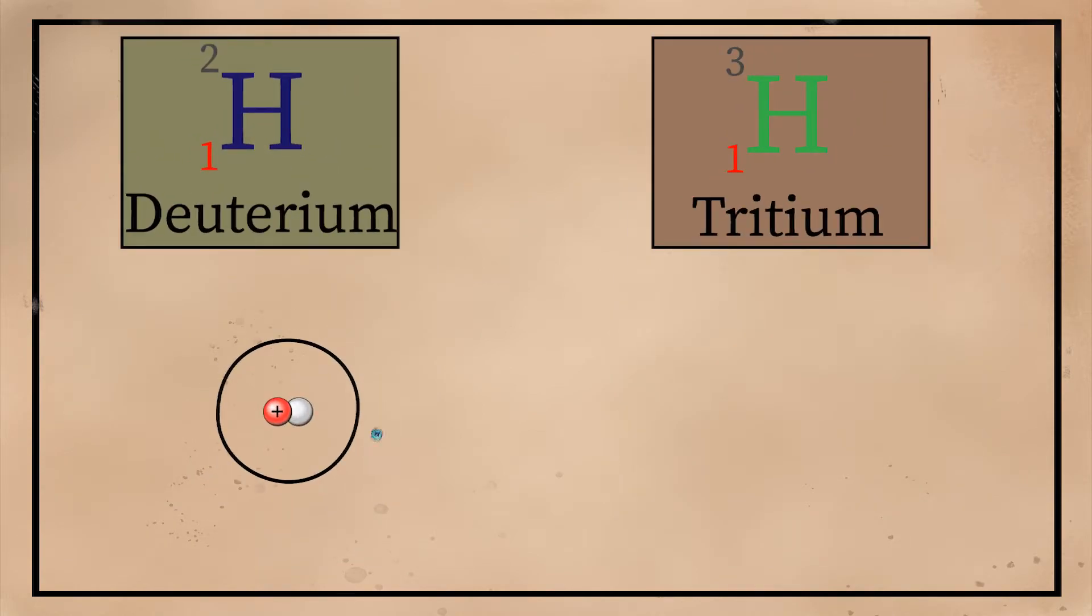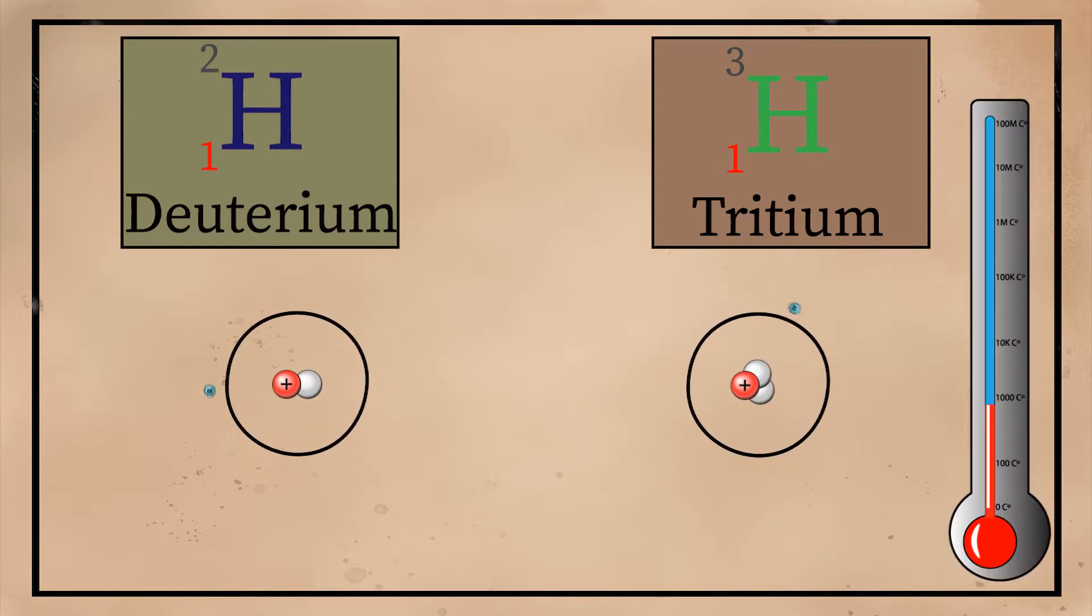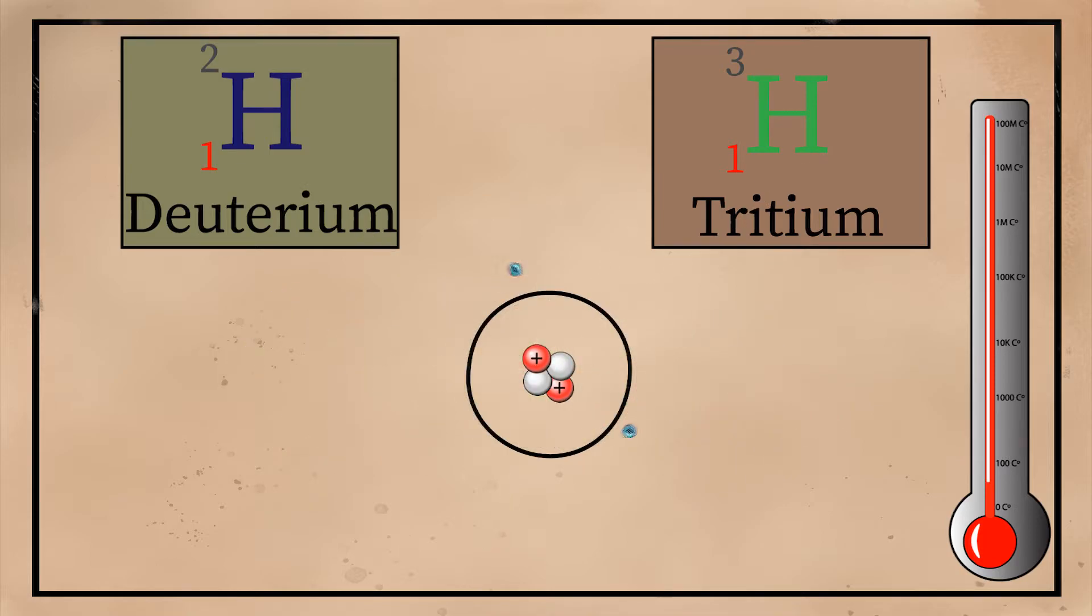But why is the fusion reaction so hard to sustain? Well, for two nuclei to fuse, they need to be extremely close to each other—we're talking 10 to the negative 14 meters close. It wouldn't be so hard if the nuclei didn't repel each other due to their positive charge. To overcome this repulsive force, the nuclei must have a lot of energy, and by a lot of energy I mean 10 times hotter than the core of the sun, or about 100 million degrees Celsius.